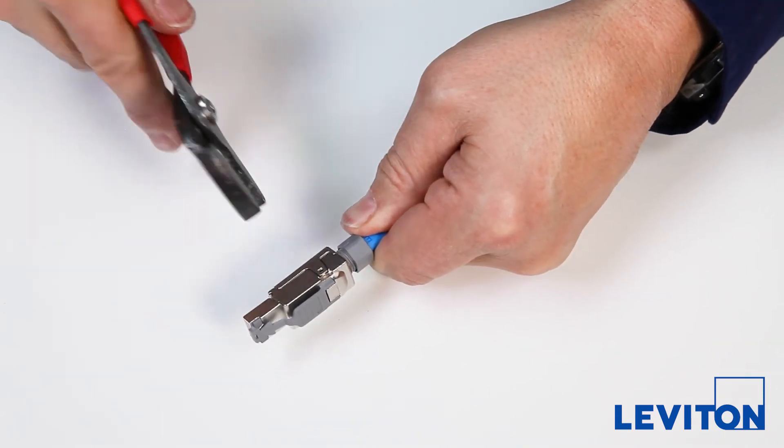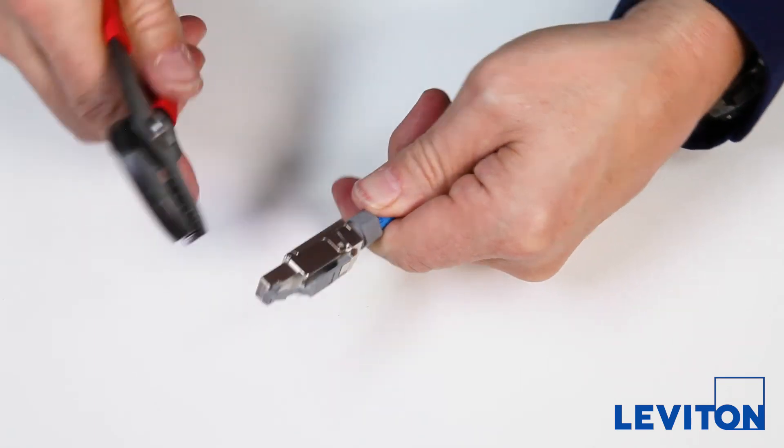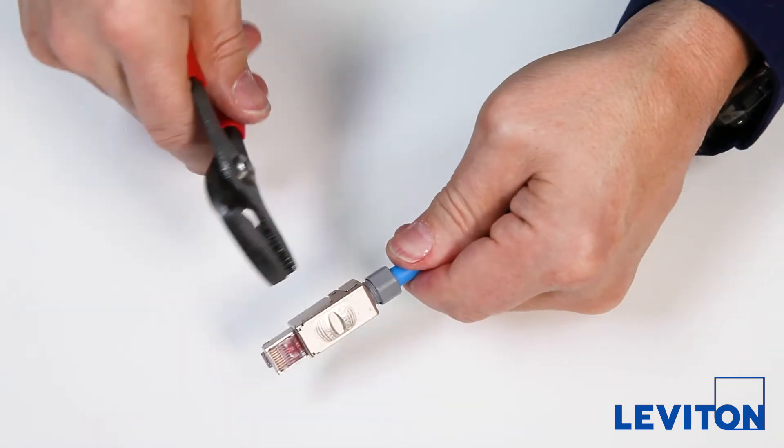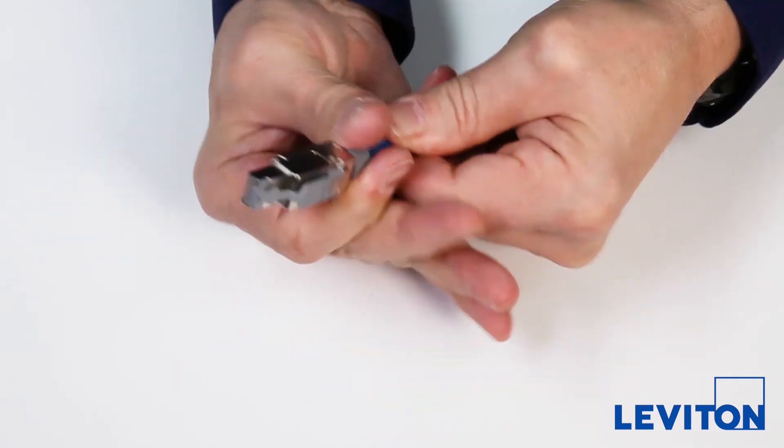If you have trouble fully closing the plug cover, use channel lock pliers to gently squeeze each corner into place. Be sure to compress the body, not the plug's latch. Screw the nut onto the back of the plug.